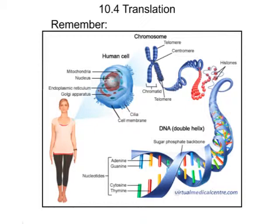Before we get to that, let's review quickly. All eukaryotic cells contain a nucleus where we have chromosomes, and those chromosomes contain DNA. DNA is made of a sugar-phosphate backbone — it's a double-stranded helix with base pairs forming the rungs. We also learned how DNA replicates itself and how DNA uses transcription to create RNA.